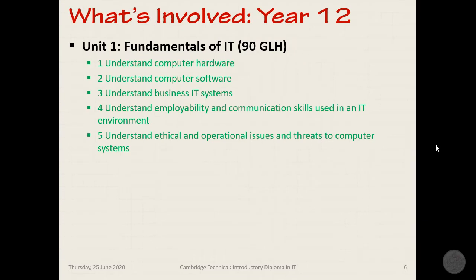Unit 1 is an exam unit and not all units are equal — it has 90 Guided Learning Hours, while the coursework units are all 60. The things you'll be covering include computer hardware in a lot of depth: all the various input and output devices, components, processors, motherboards, memory, and expansion cards.